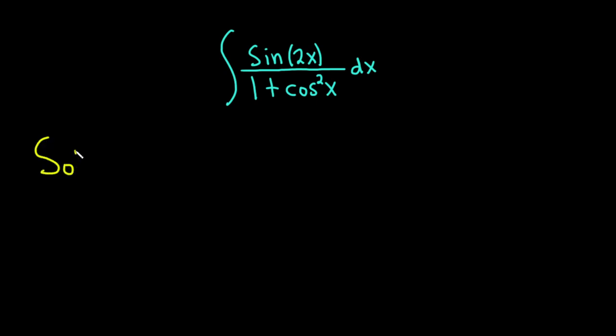Let's go ahead and work through it. Solution. So let's start by using an identity on sine 2x, that way we can get rid of the 2x. We can rewrite this integral as follows. Instead of sine 2x, we can write 2 sine x cosine x. This is all divided by 1 plus cosine squared x dx.